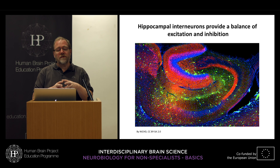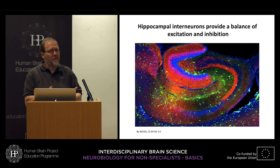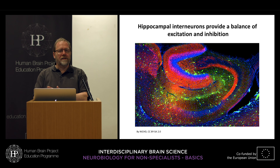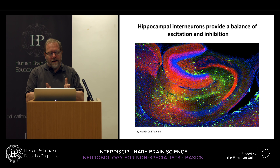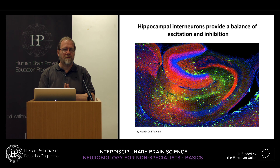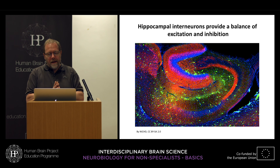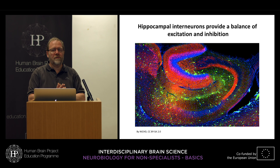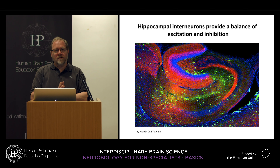The hippocampus as an important structure for learning was identified through damage. We learn a lot about function when structures are disturbed or destroyed. One critical moment in brain knowledge was patient HM — as a boy he had a brain injury which caused temporal lobe seizures, temporal lobe epilepsy, known to originate from the hippocampus. The surgeon at the time decided to remove the hippocampus, and to make sure he removed both hippocampi, which led to severe anterograde amnesia.